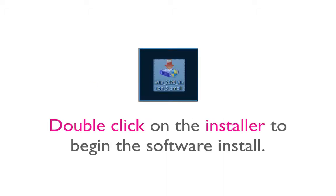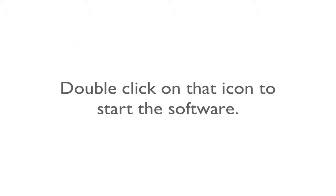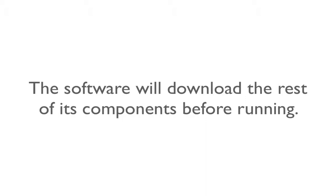Double-click on the downloaded installer to begin the software install. A new icon will appear on your desktop that looks like a small iChart. Double-click on that icon to start the software. The software will download the rest of its components before running. After the download is complete, a registration window will appear.